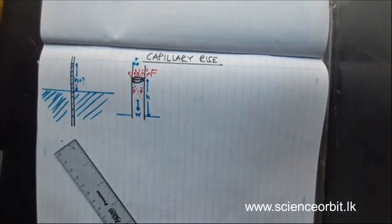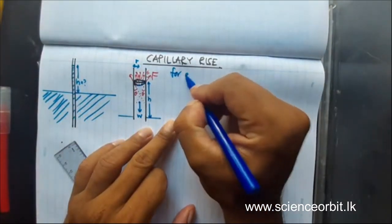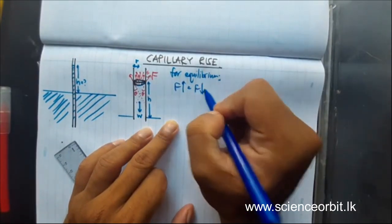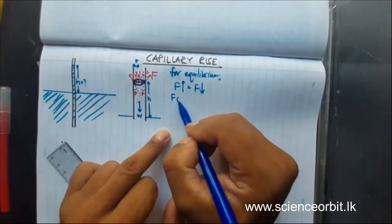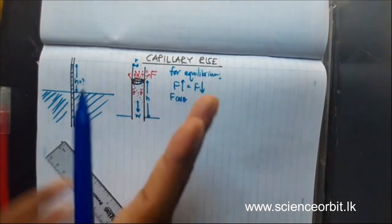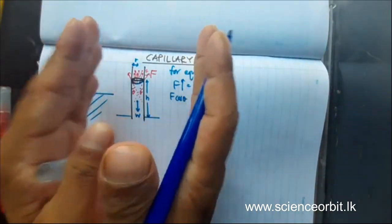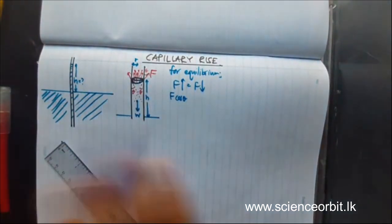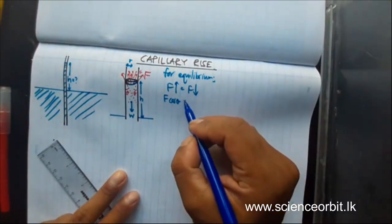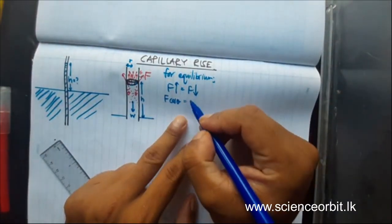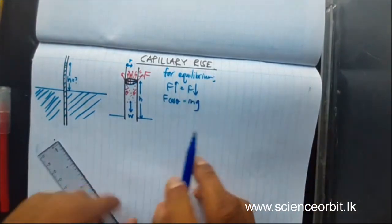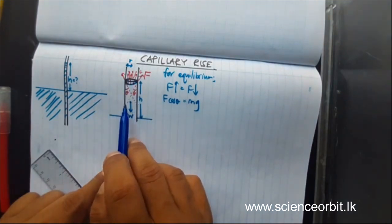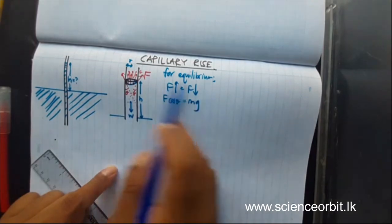Considering equilibrium, the upward force must equal the downward force. The upward force is actually F cos theta — you take the vertical component. When you take the horizontal components, all of them cancel out each other, so only vertical forces remain. F cos theta equals the weight, which I will write as mg. Simple r is available, H is available, the density of the liquid is available, the surface tension is available, and the contact angle is available — we will substitute these values.